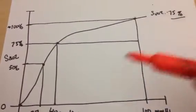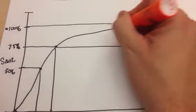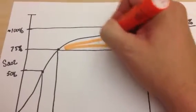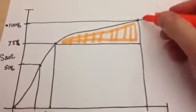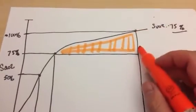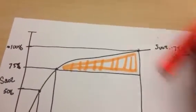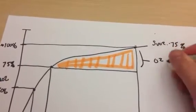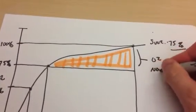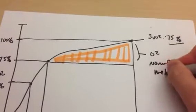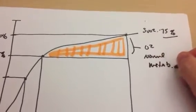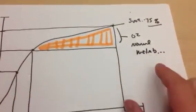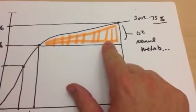So what I'm saying is that this space in here from 100% down to 75%, this right here is my O2 use under normal metabolism. It's my normal oxygen use under normal metabolism, and you can see I'm only using 25%.